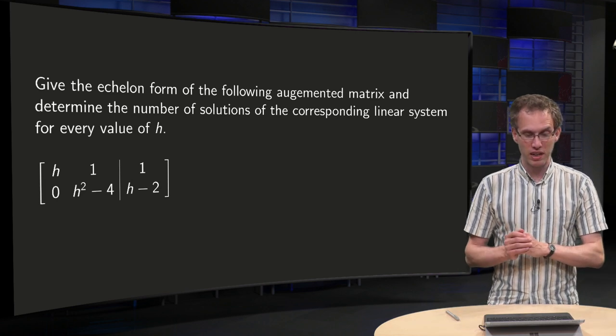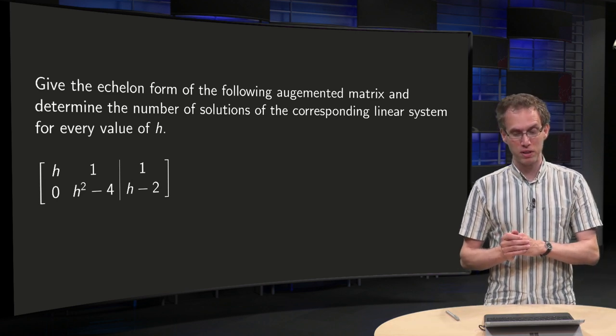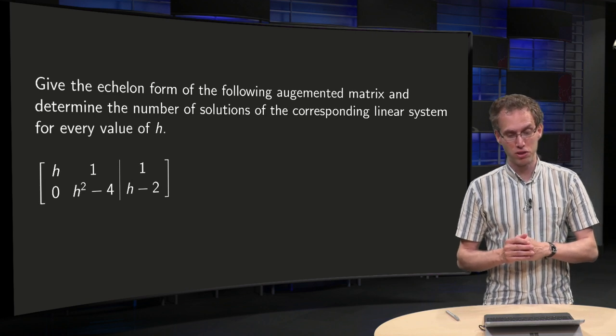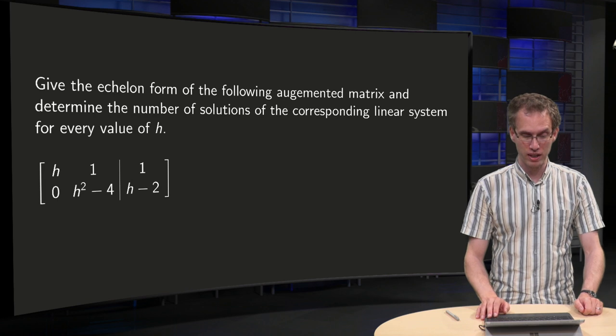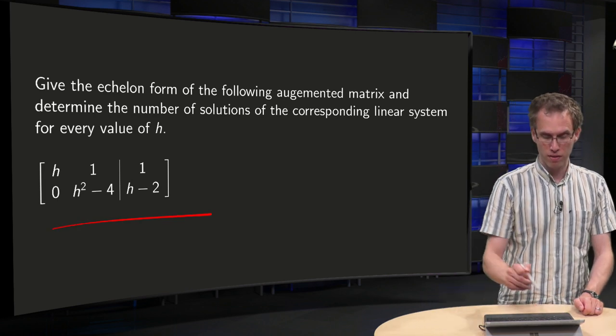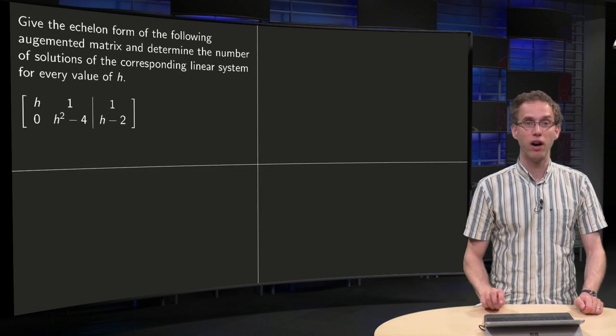Question is, give the echelon form of the following augmented matrix and determine the number of solutions of the corresponding linear system for every value of h. And over here we have our augmented matrix.